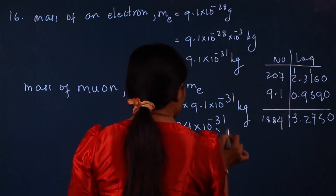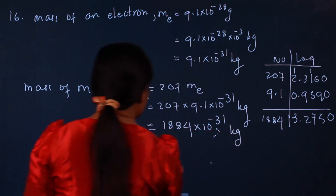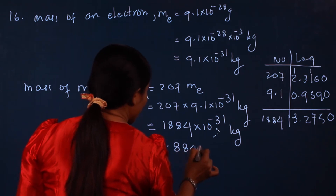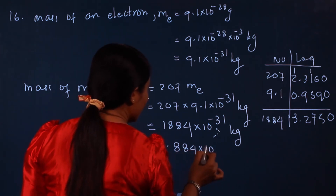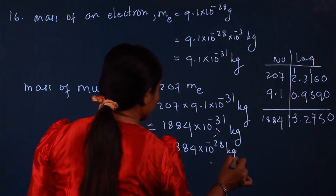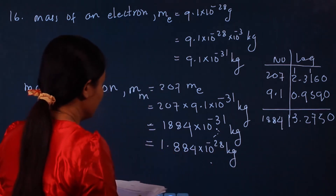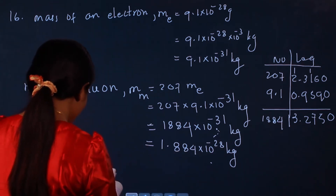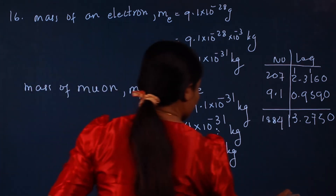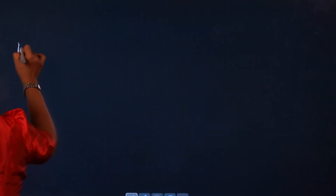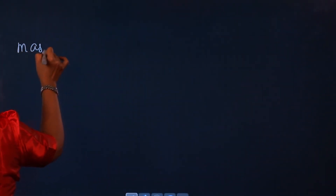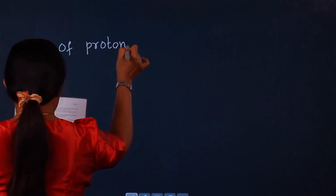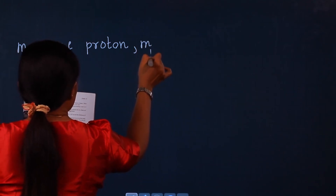The mass of the electron equals 9.1 × 10 to the power minus 31 kg, and into 10 to the power minus 28 kilograms for comparison. Now we have the mass of proton — MP.